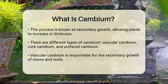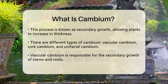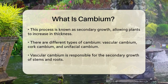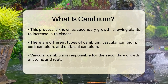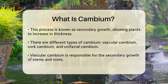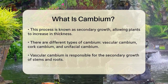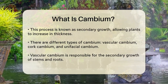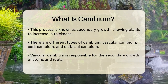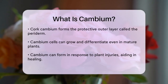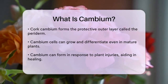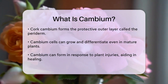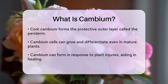There are a few different types of cambium, each with its own specific job. The vascular cambium is the most common and is responsible for the secondary growth of stems and roots. Then there's the cork cambium, which helps form the protective outer layer of the plant, known as the periderm. There's also the unifacial cambium, which produces cells in one direction.